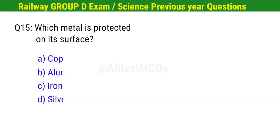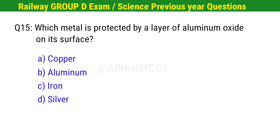Question No. 15. Which metal is protected by a layer of aluminum oxide on its surface? Right option is B. Aluminum.